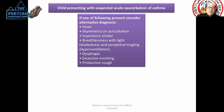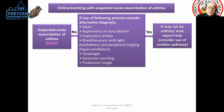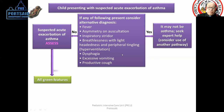Excessive vomiting suggests aspiration. Productive cough suggests infection or other pathology. Tight chest and dry cough points toward asthma. If there is fever, stridor, or other features, we will consider diagnoses other than asthma. If those features are absent, we will say it is asthma.